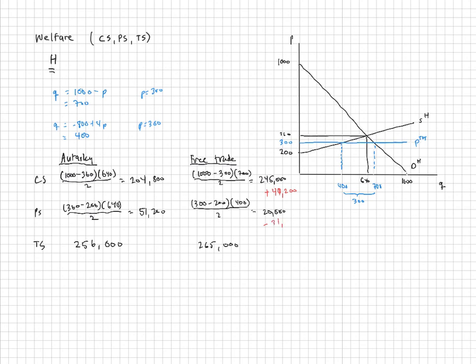The change in consumer surplus minus the loss to producers is 9,000, which equals the difference in total surplus before and after free trade was allowed. That's how we find the reason for trade being relative prices, determine the terms of trade, and conduct welfare analysis.